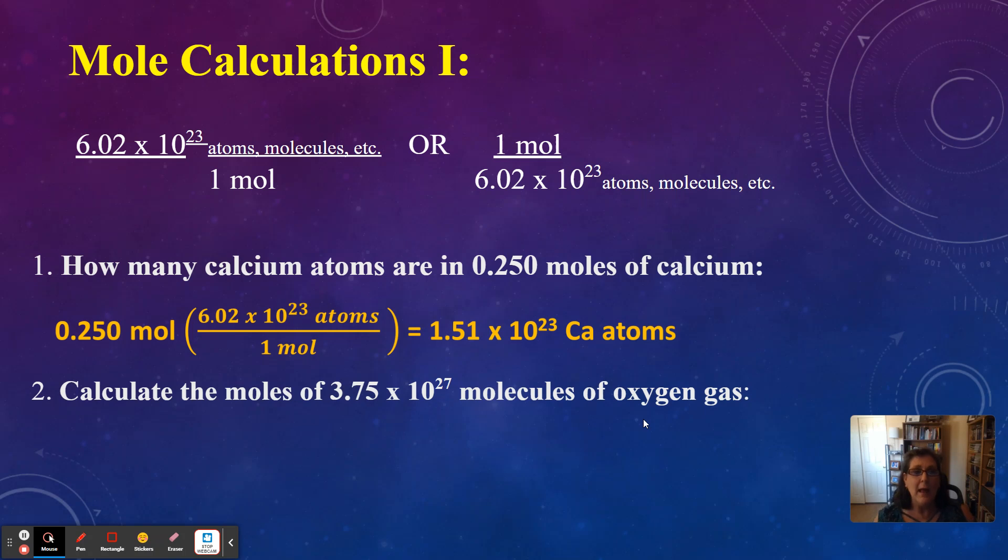Anyway, the moles cancel, right? And we're left with atoms. So you punch this into your calculator. Let's remind ourselves how to do these scientific numbers. 0.250 times 6.02. Don't hit times 10. Instead, find your exponent button, EE or EXP. You may have to hit the second function to get to it. Hit your exponent EE button, then type in the 23, and hit equals. And we should have 1.505, and then over in the corner, it's times 10 to the 23rd. But sig figs, we started with 3. 6.02 has 3. It's a measurement. It counts. 6.02 has 3 sig figs. So we need to round that to 1.51 times 10 to the 23rd calcium atoms. The unit is atoms. We need a unit. Moles canceled.